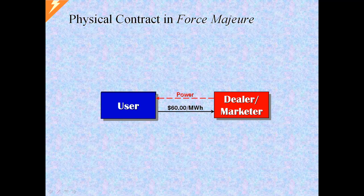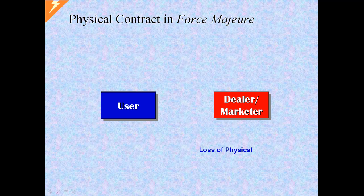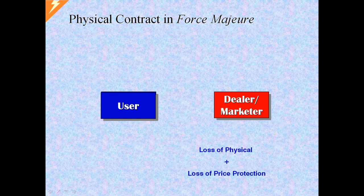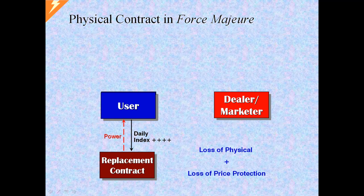This separation of physical from financial also has implications in force majeure. In a fixed price supply contract, if the seller declares force majeure, deliveries and payments are stopped. The buyer loses physical supply. But we know that bundled with supply in this fixed price contract is also price risk protection. When supply is lost, so is this price protection. Supply will have to be replaced in the daily market. Force majeure, as it reduces supply to the market, is likely to add a premium to that replacement cost.